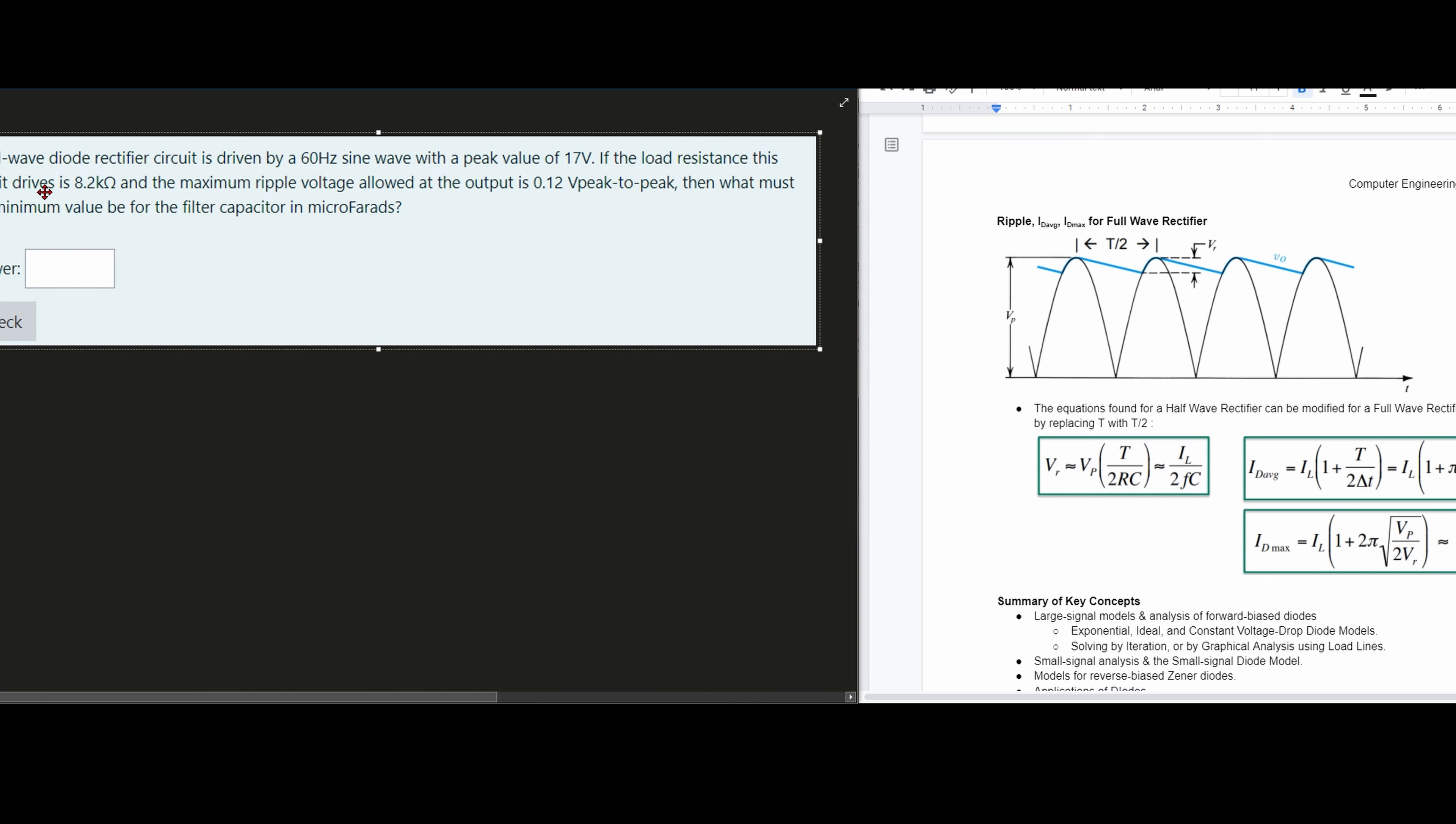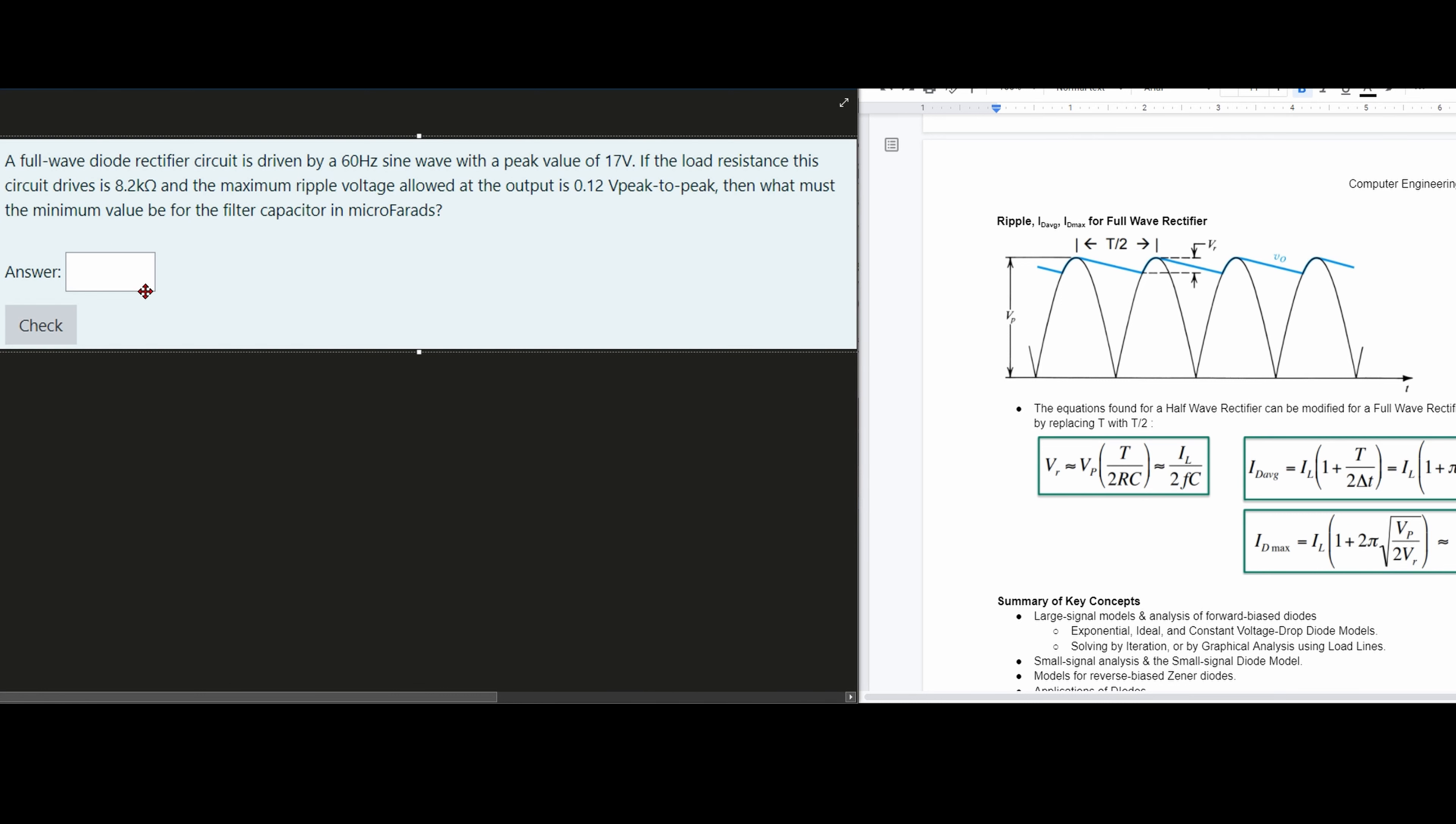For this problem analysis, a full-wave diode rectifier circuit is driven by a 60 Hz sine wave. We can note down this information: a 60 Hz sine wave with a peak value of 17 volts. If the load-resistant circuit drive is 8.2 kΩ, and the maximum ripple voltage VR allowed at the output is 0.12 V peak-to-peak, then what must the minimum value be for the filter capacitor in microfarads? This is what we want to find - the minimum value for our filter capacitor.